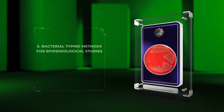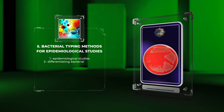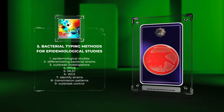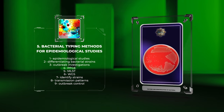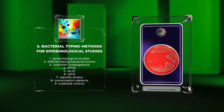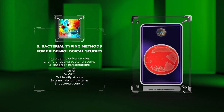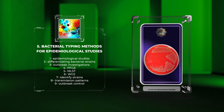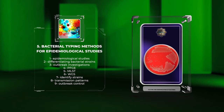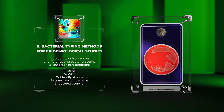In epidemiological studies, differentiating bacterial strains is crucial for outbreak investigations. Techniques like PFGE, MLST, and WGS help identify strains and their transmission patterns, aiding in outbreak control.